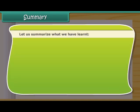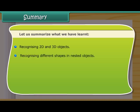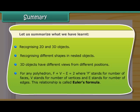Let us summarize what we have learned. Recognizing 2D and 3D objects. Recognizing different shapes in nested objects. 3D objects have different views from different positions. For any polyhedron, F plus V minus E is equal to 2, where F stands for number of faces, V stands for number of vertices, and E stands for number of edges. This relationship is called Euler's formula.